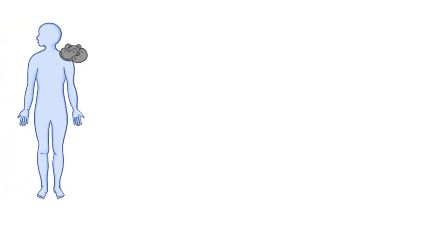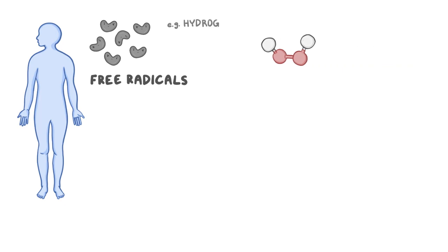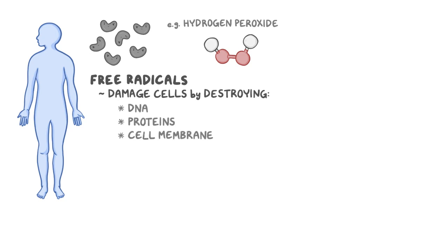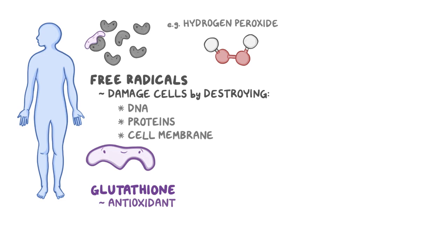Normally, as part of the metabolic process, our body produces free radicals like hydrogen peroxide or H2O2. Free radicals can damage the cells in many ways, including destroying the DNA, proteins, and the cell membrane. We have a molecule in our body called glutathione, which acts as an antioxidant and goes around and neutralizes these free radicals.